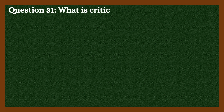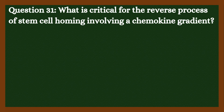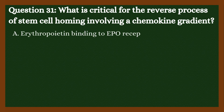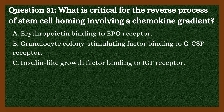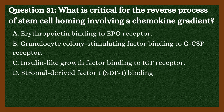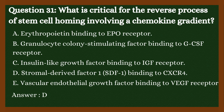Question 31: What is critical for the reverse process of stem cell homing involving a chemokine gradient? A. Erythropoietin binding to EPO receptor. B. Granulocyte colony-stimulating factor binding to GCSF receptor. C. Insulin-like growth factor binding to IGF receptor. D. Stromal-derived factor 1 (SDF-1) binding to CXCR4. E. Vascular endothelial growth factor binding to VEG receptor. Answer is D. Stromal-derived factor 1 (SDF-1) binding to CXCR4.